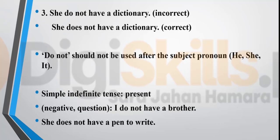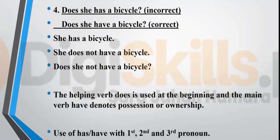'She do not have a dictionary' — this is incorrect. In simple present tense, 'do' and 'does' are used in negative and question sentences. For third person singular — he, she, it — you use 'does.' For first person, second person, and third person plural, you use 'do.' So: she does, he does, it does; I do, we do, you do, they do. 'Do not' should not be used after he, she, or it. Correct form is 'she does not have a friend.'